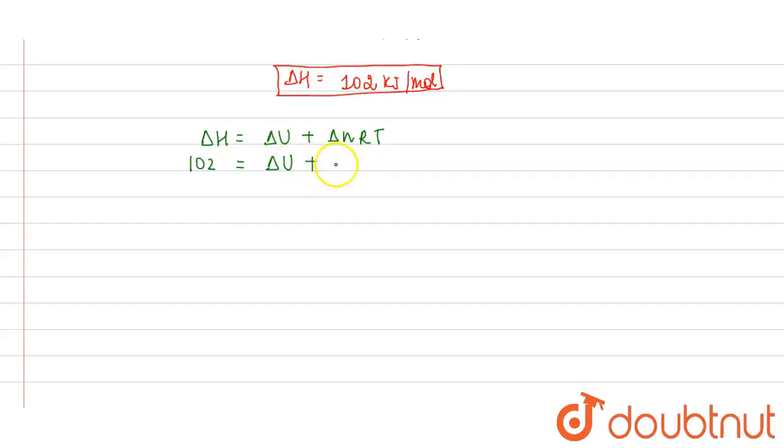Delta U we need to calculate. Delta n is 1, into R we will take 8.314, into temperature is 77 degrees Celsius. Convert this degree Celsius into kelvin by adding 273, so it will be 350 kelvin.